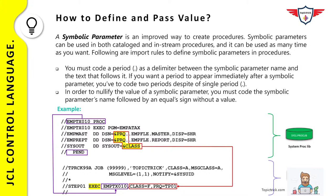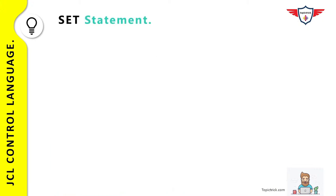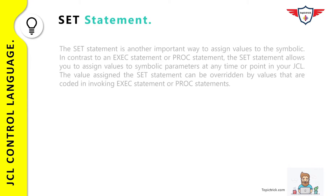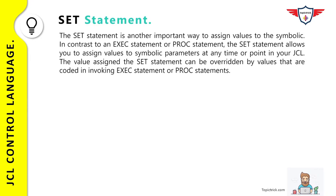The following example illustrates symbolic parameters in catalog procedure EMPTX010 stored in SYS1.PROCLIB. The proc uses two datasets: EMPMST (employee master) with DD name EMPMAST, and employee report with DD name EMPREPT. Instead of a hard-coded high-level qualifier, the symbolic parameter &PRQ is used. When invoking the procedure from the JCL, STEP01 executes EMPTX010 and passes the values: CLASS=F and PRQ=TP01. Note that when defining symbolic parameters in procedures you use &, but when passing values from JCL you do not use &. The beauty of symbolic parameters is that you can write generic procedures usable across multiple jobs by only changing the symbolic parameter values — for example, switching from production to test environment.